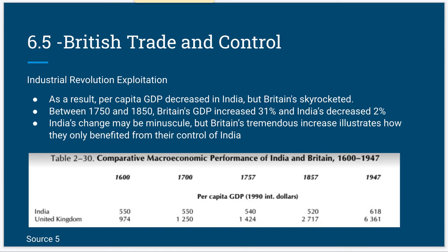British imported goods began taking over the Indian markets in a frenzy and it created further economic decline. As a result of the industrial trade exploitation, per capita GDP decreased in India while Britain's skyrocketed. Britain's GDP increased 31% and India's decreased 2% between 1750 and 1850. India's change may be minuscule, but Britain's tremendous increase illustrates how they only benefited from their control of India.